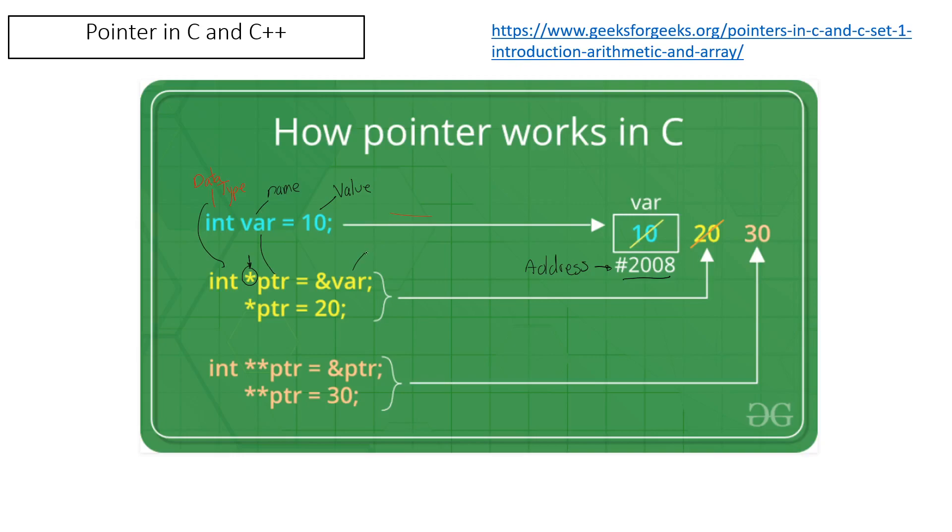In this case you see this symbol, it represents the address. So what we are doing here is we are declaring the pointer and the pointer will point to the address of the variable. So actually the pointer is pointing to this number 2008.